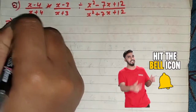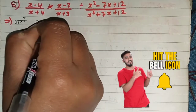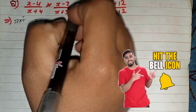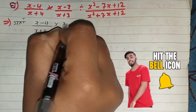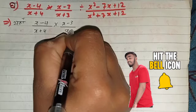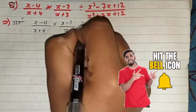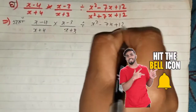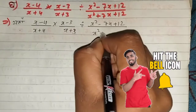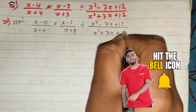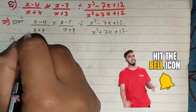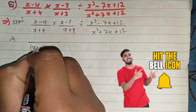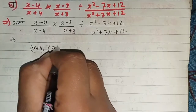Now: yaksa minus 4 upon yaksa plus 4, into yaksa minus yaksa plus tiri. 2x square minus 7x plus 21 upon x square plus 7x plus 21 is equal to 2x square minus 4x plus 3x plus 3.